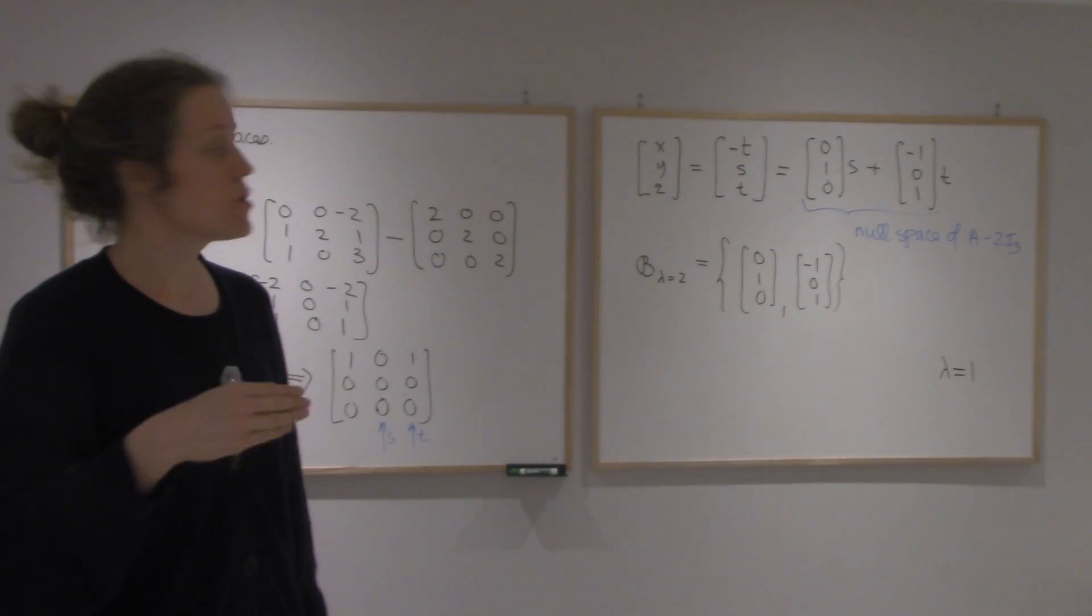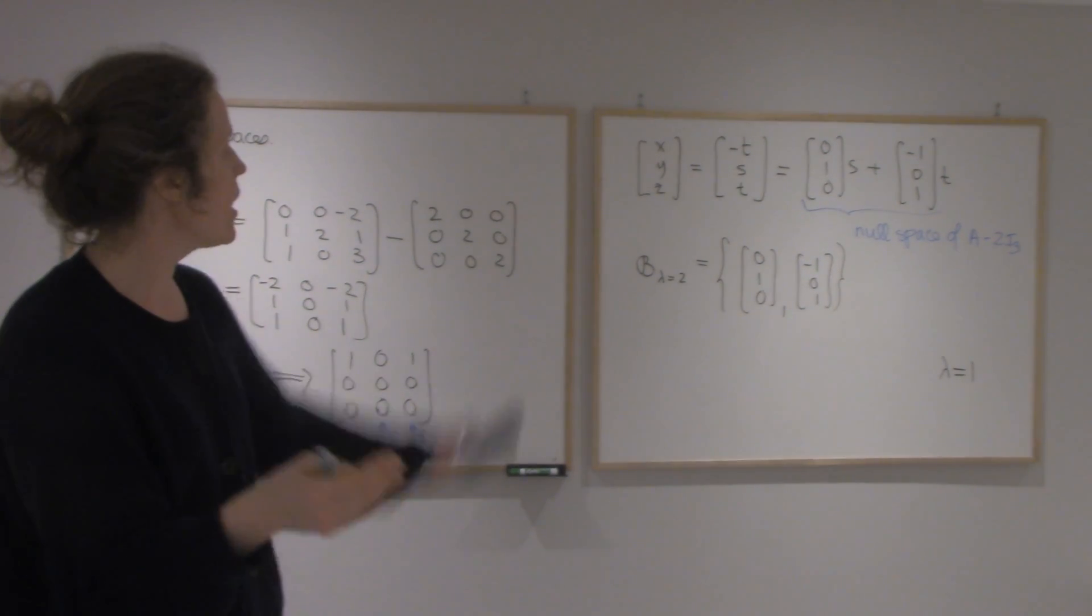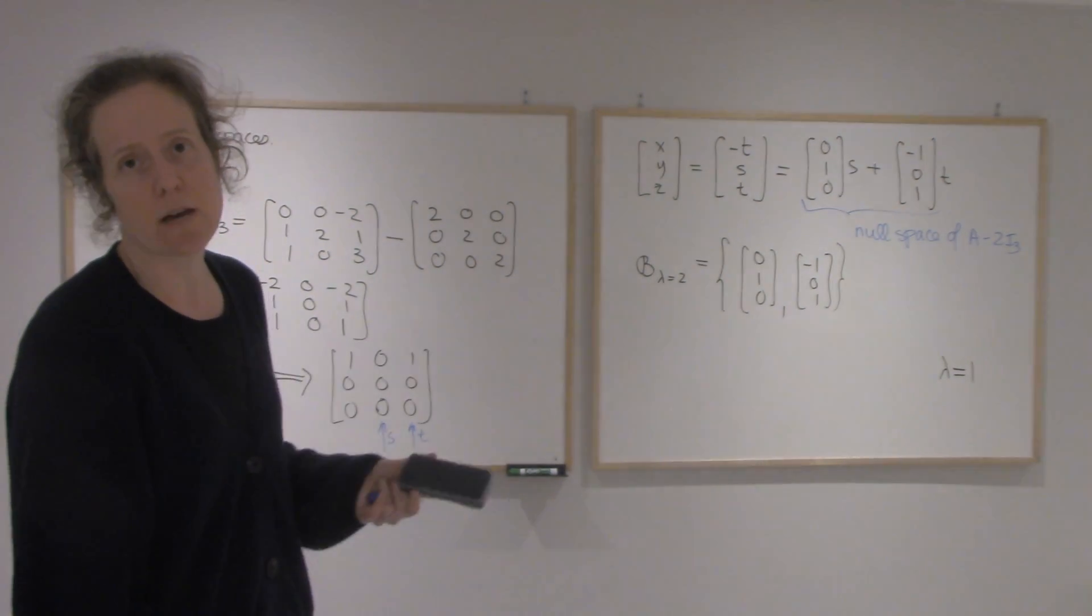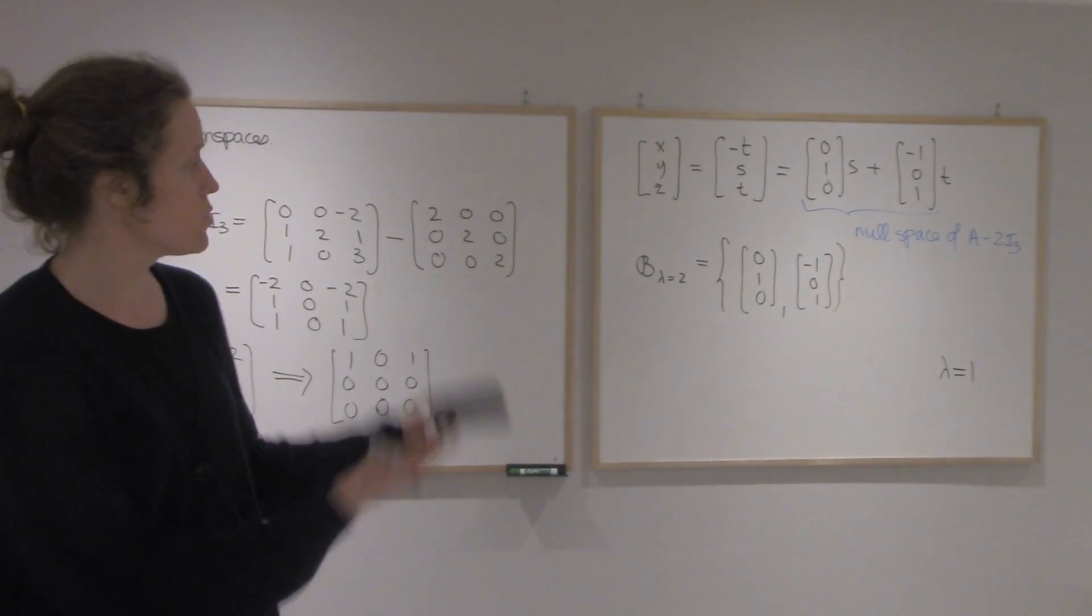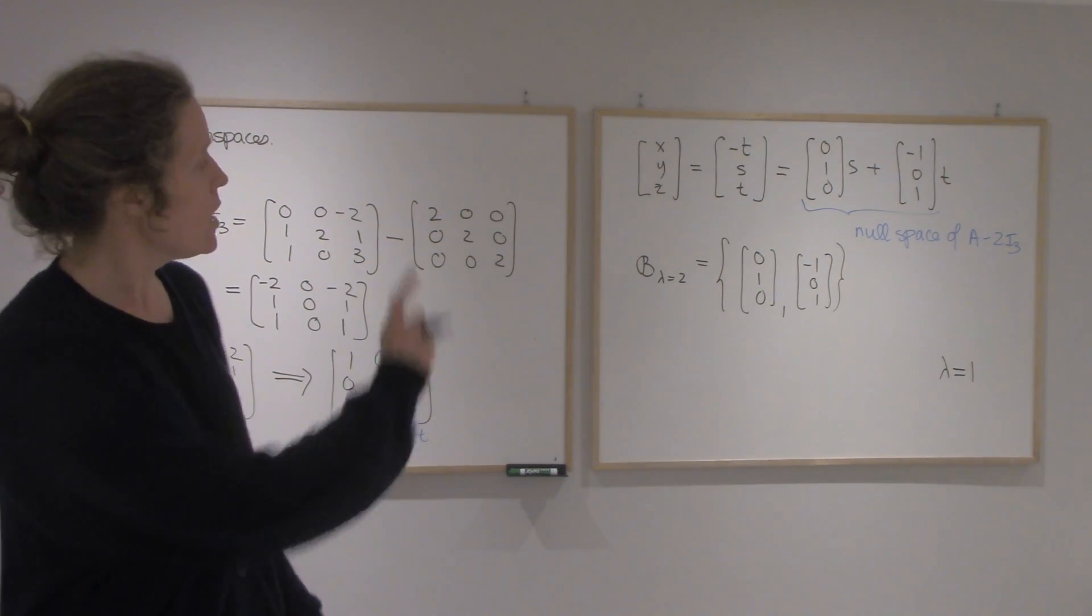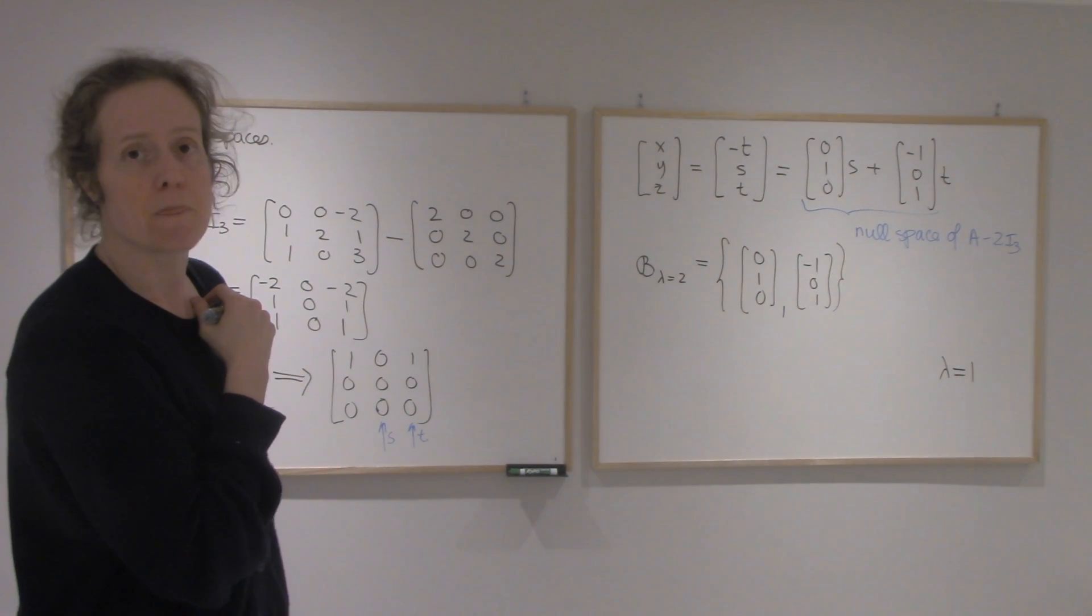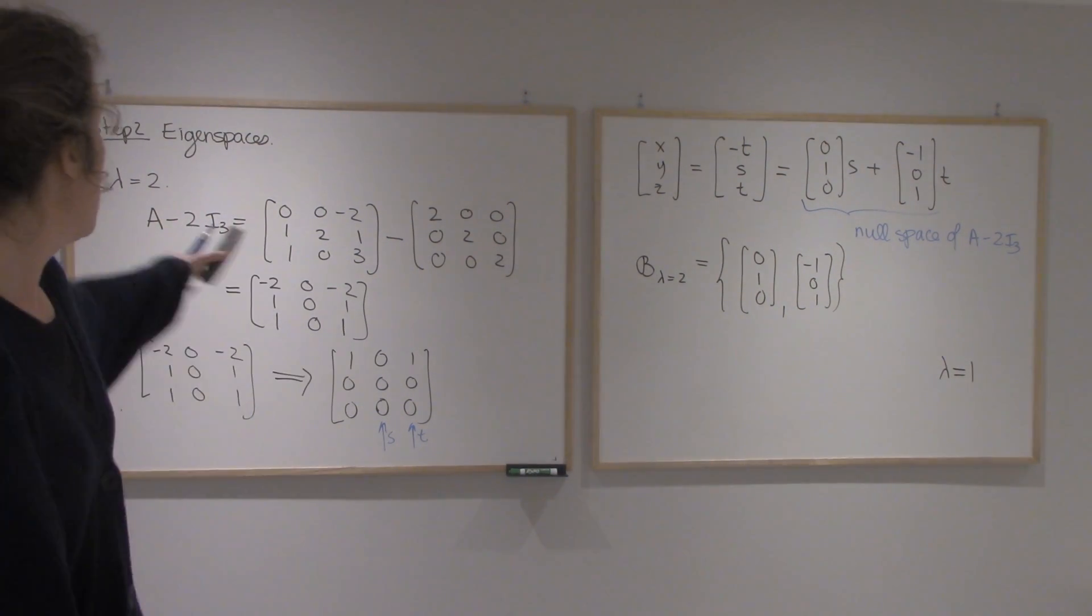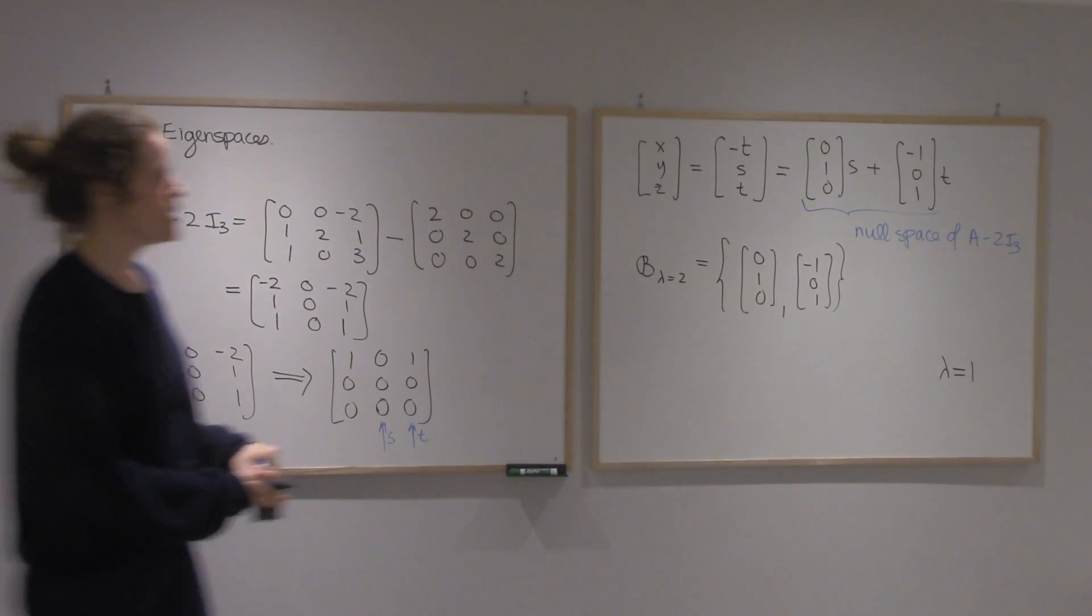Now as you know, bases are not usually unique. So here that's one answer. You could multiply these or take a linear combination of them. But this is the one that comes out most naturally out of the reduction of the matrix A. So I expect most of you to get exactly the same one as me. Maybe with the vectors in a different order. Alright, so that's the basis for the eigenspace of A with lambda equals 2. Let's do lambda equals 1.